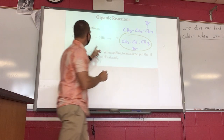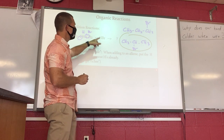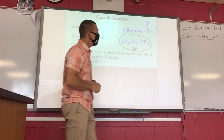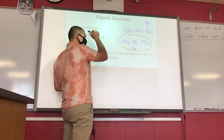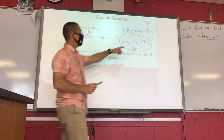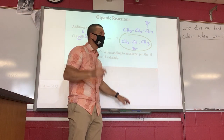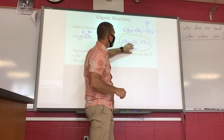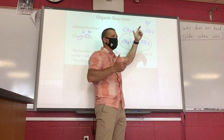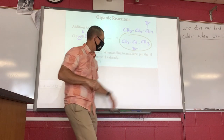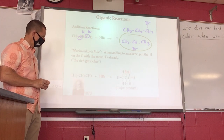The major product has the bromide attached to the secondary carbon, not the primary carbon — consistent with what was said about substitution. You will get some of the other product, but the major product is the one where the halogen ends up on the more substituted carbon.